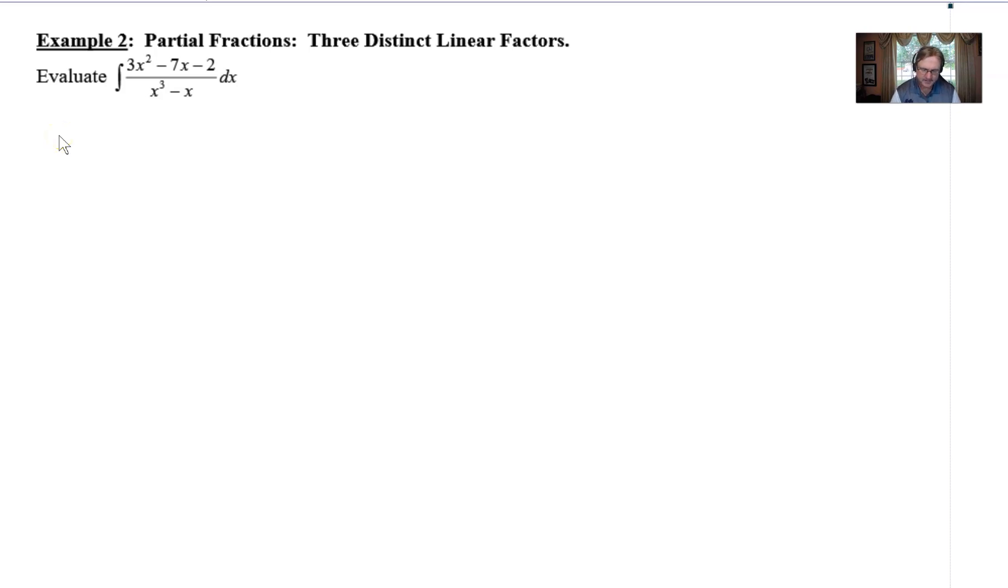So we've got the makings for a nice partial fraction decomp problem. We're going to forget for a moment that this is a calculus question, and we're just going to factor that denominator. That denominator is going to factor so that we can bring out an x, leaving you with x² - 1, which means we can factor it even further into x minus 1, x plus 1. It's a difference of squares.